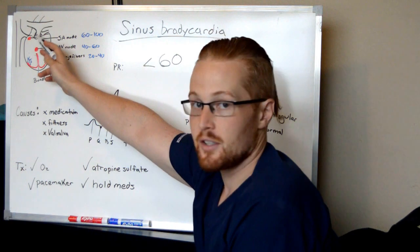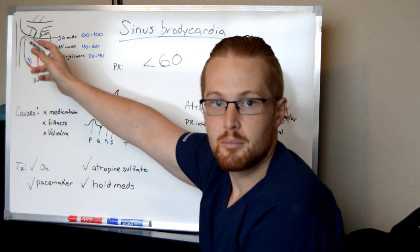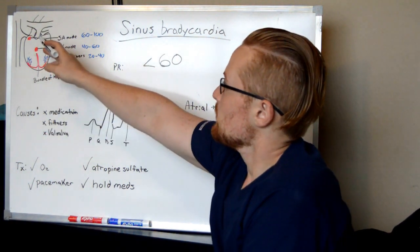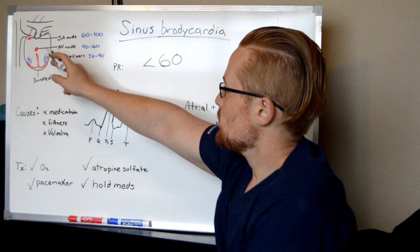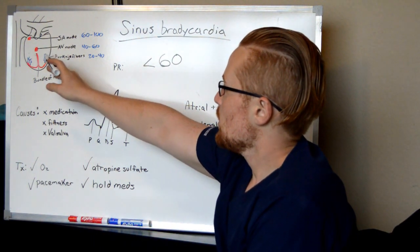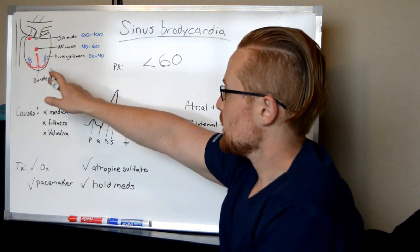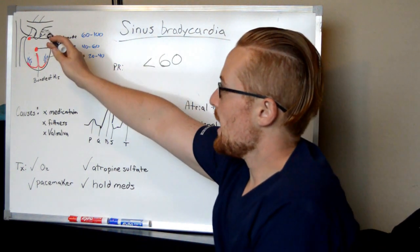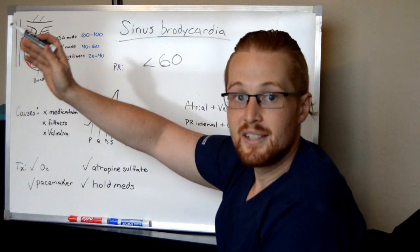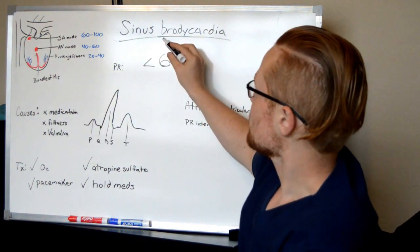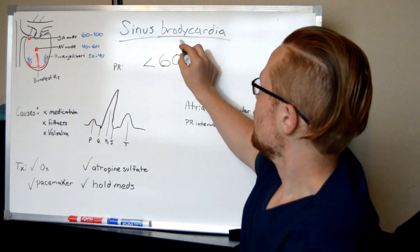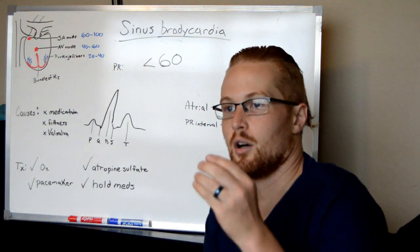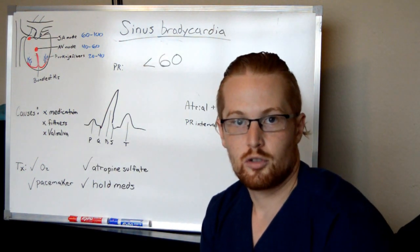The SA node is sinoatrial, found at the top of the atrium where it connects to the vena cava. The other conduction systems of the heart are the AV node, bundle of His, and Purkinje fibers. But for sinus bradycardia, the SA node is intact.